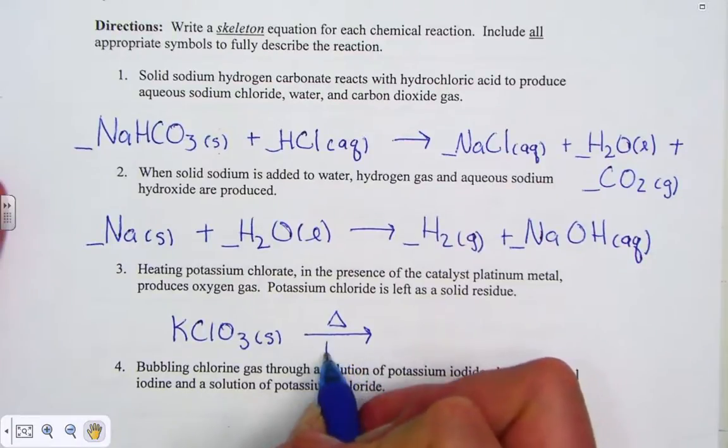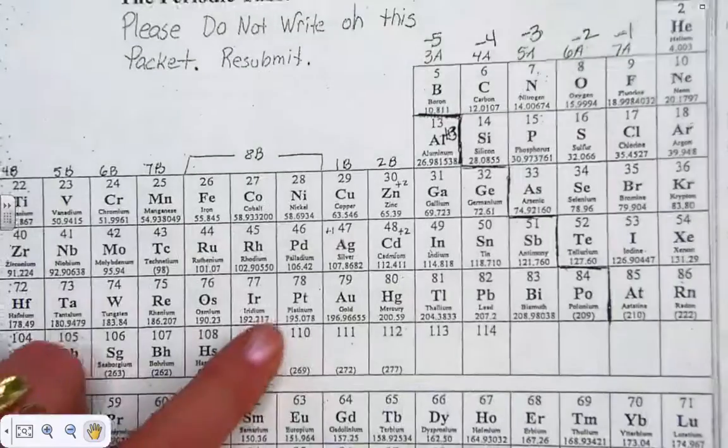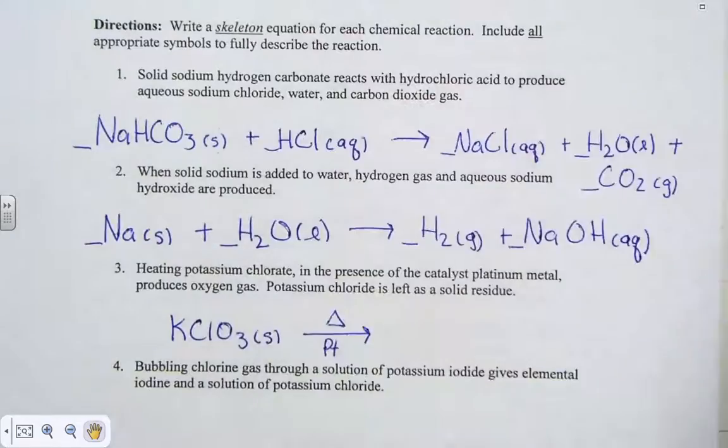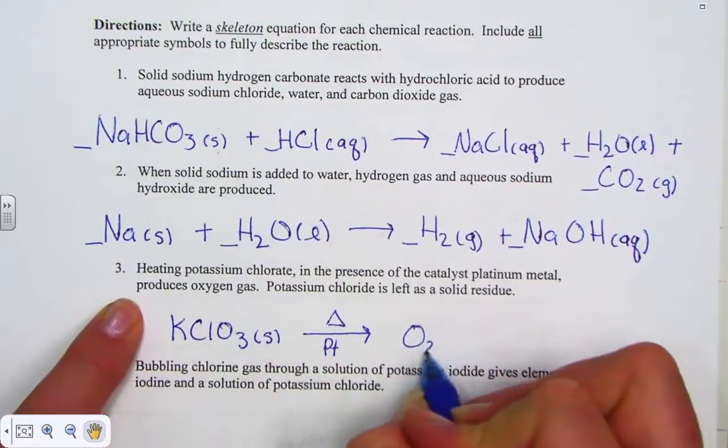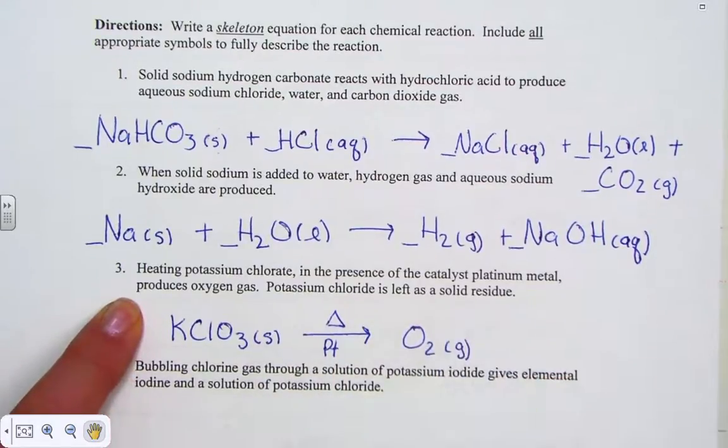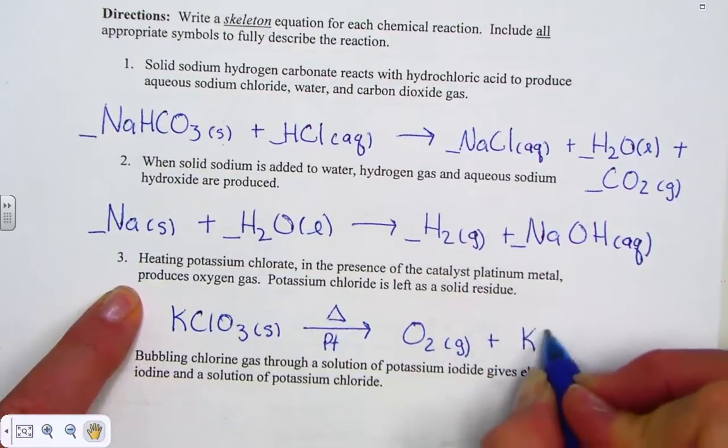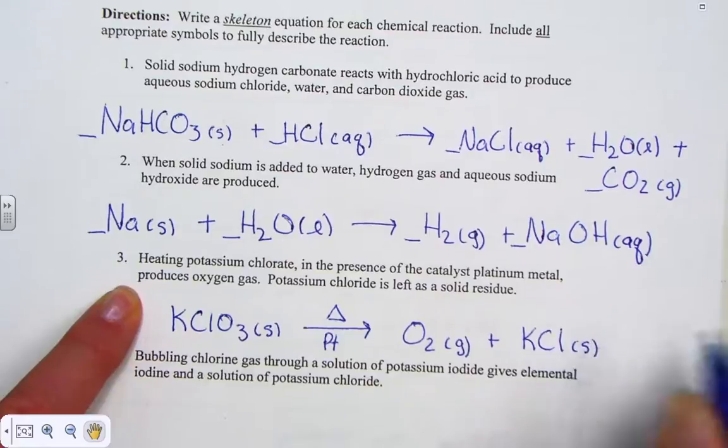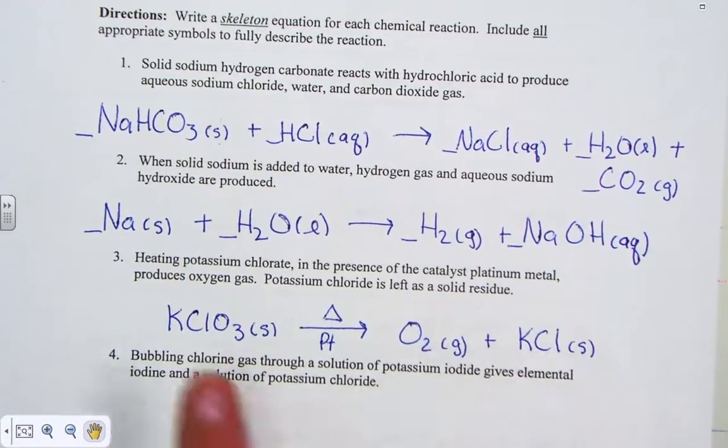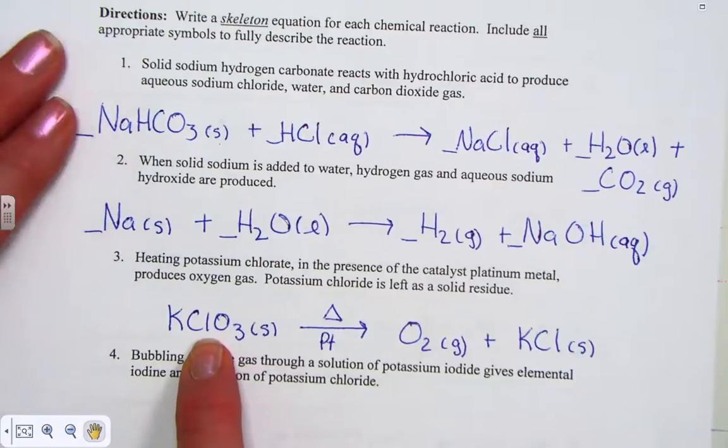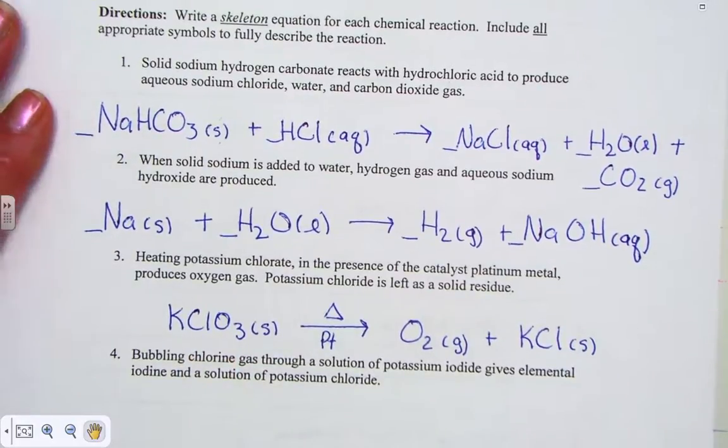And platinum metal is the other catalyst. Platinum is PT as its symbol, and we know that catalysts are just placed on the arrow, producing oxygen gas. And potassium chloride left as a solid residue, so again it's a product. Potassium chloride, potassium chlorate, oxygen is separated. Of course, we can see that as a decomposition.